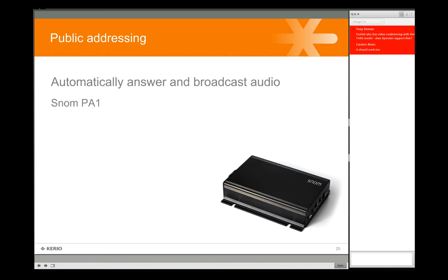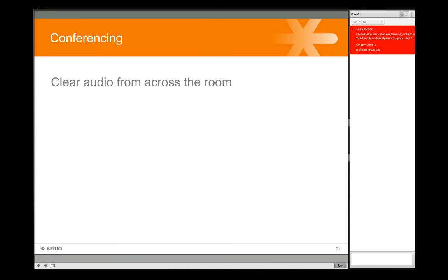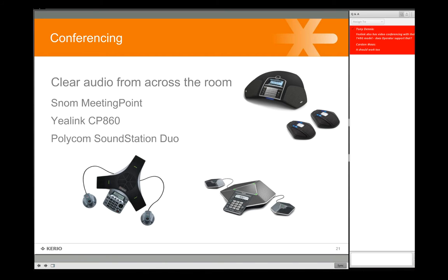For public address scenarios — like a warehouse or school environment — the SNOM PA1 adapts to loudspeakers to broadcast to a larger area, even an auditorium. It has a built-in speaker for smaller environments and can connect to a more amplified sound setup. You simply make a call to the extension registered to the device and it automatically answers and broadcasts the sound. For conferencing, supported auto-provisioning devices include the SNOM meeting point, Yealink, and Polycom.